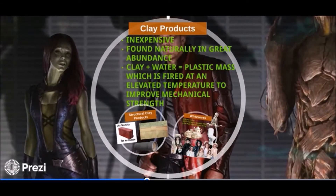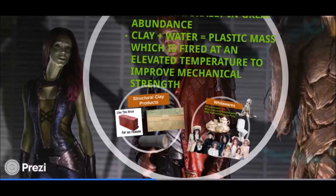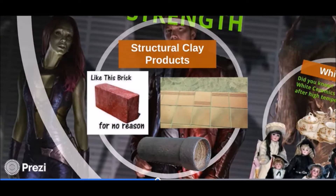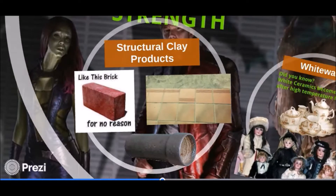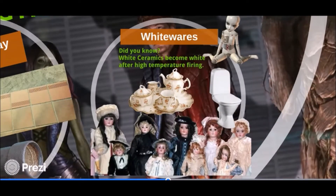Now let's head on to clay products, which are inexpensive and naturally found in great abundance. A popular mixture of clay and water makes plastic matter. Structural clay products include bricks, tiles, and sewer pipes for construction and building purposes. For whitewares — did you know that white ceramics only become white after high temperature firing? They are brown before. Examples include plumbing fixtures like sinks and toilets, fine china, and porcelain dolls.